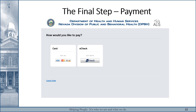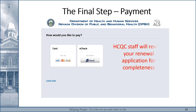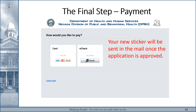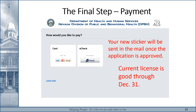Once you've completed the application and paid the fee, your application will need to be reviewed by HCQC staff for completeness. We will send you a renewal sticker in the mail once your renewal application is approved. Your current license is good through December 31st of this year, and the sticker will indicate a valid license through December 31st of next year.